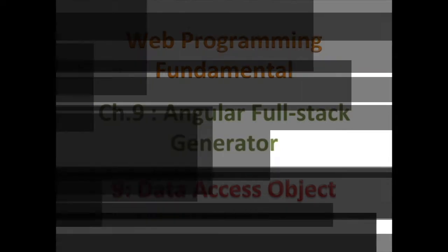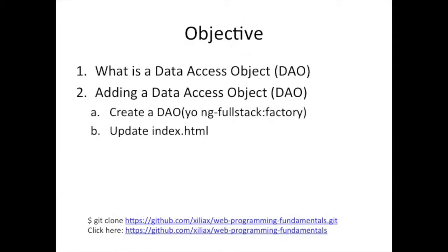Now we're going to add a data access object. We're going to talk a little bit about the data access object, but not too much because it can get pretty confusing and different technology stacks use it differently. We're just going to think of it as a way of abstracting how we interact with a data source. On our client side, we don't really have a data source like a database. Our data source is sort of like our backend server. So our DAO, data access object, is going to allow us to access objects of this data type, which in this case is going to be our comment.